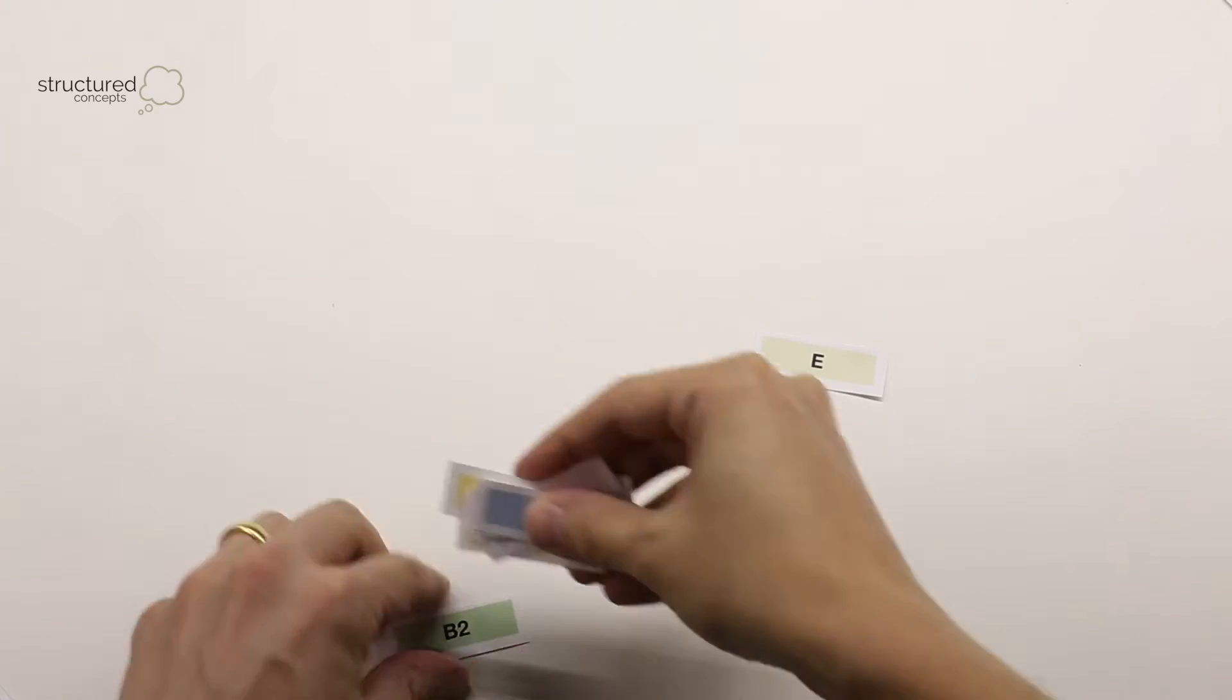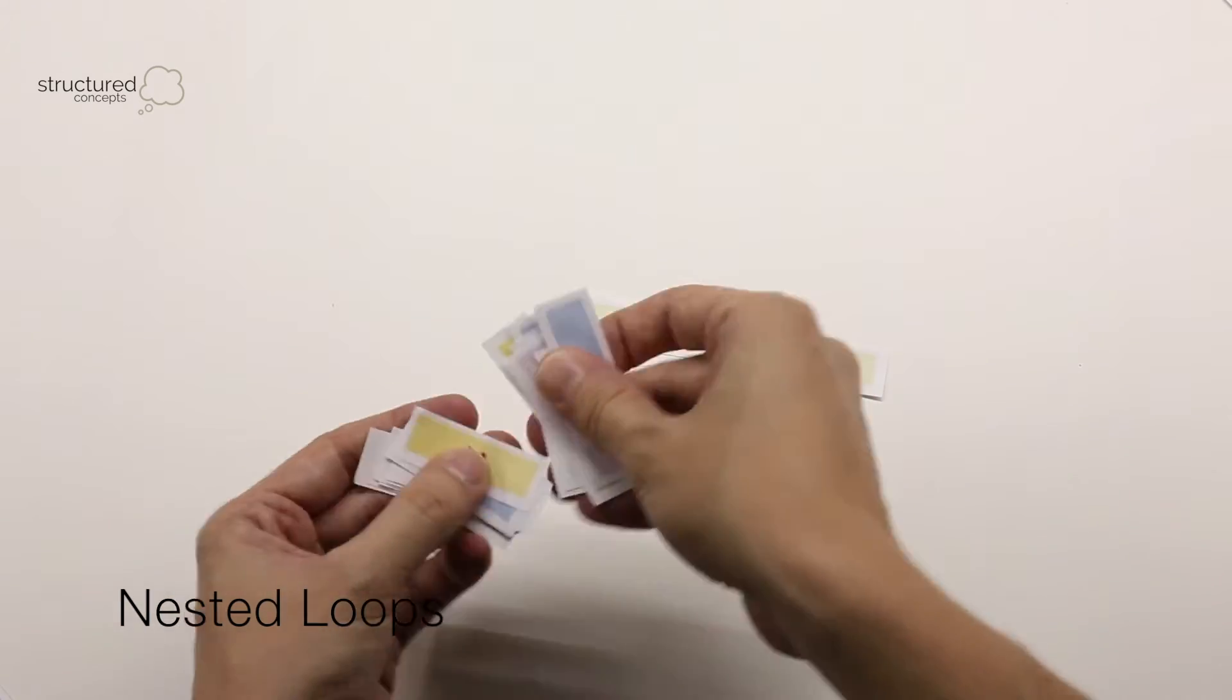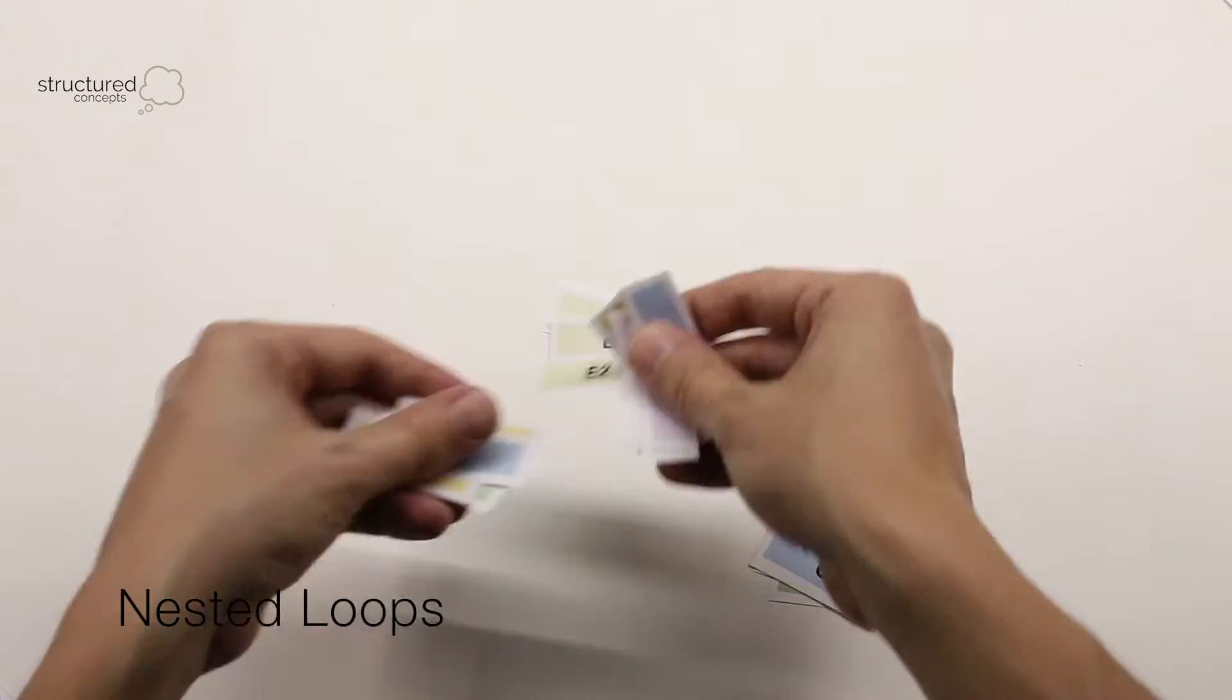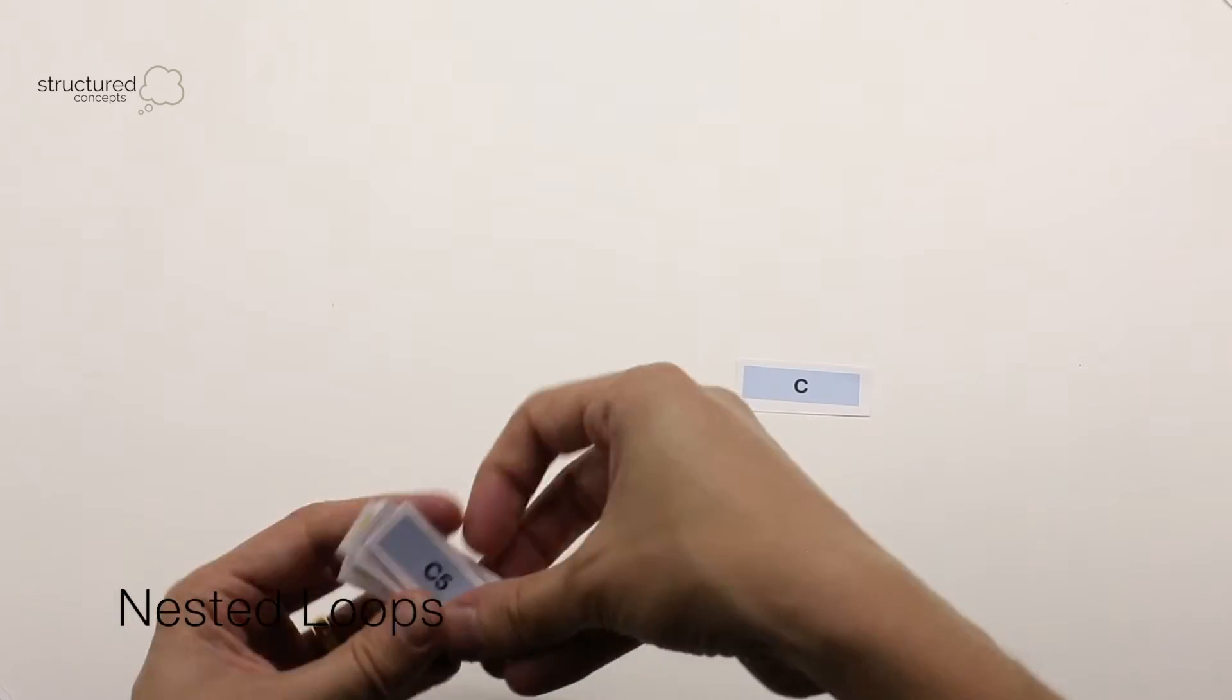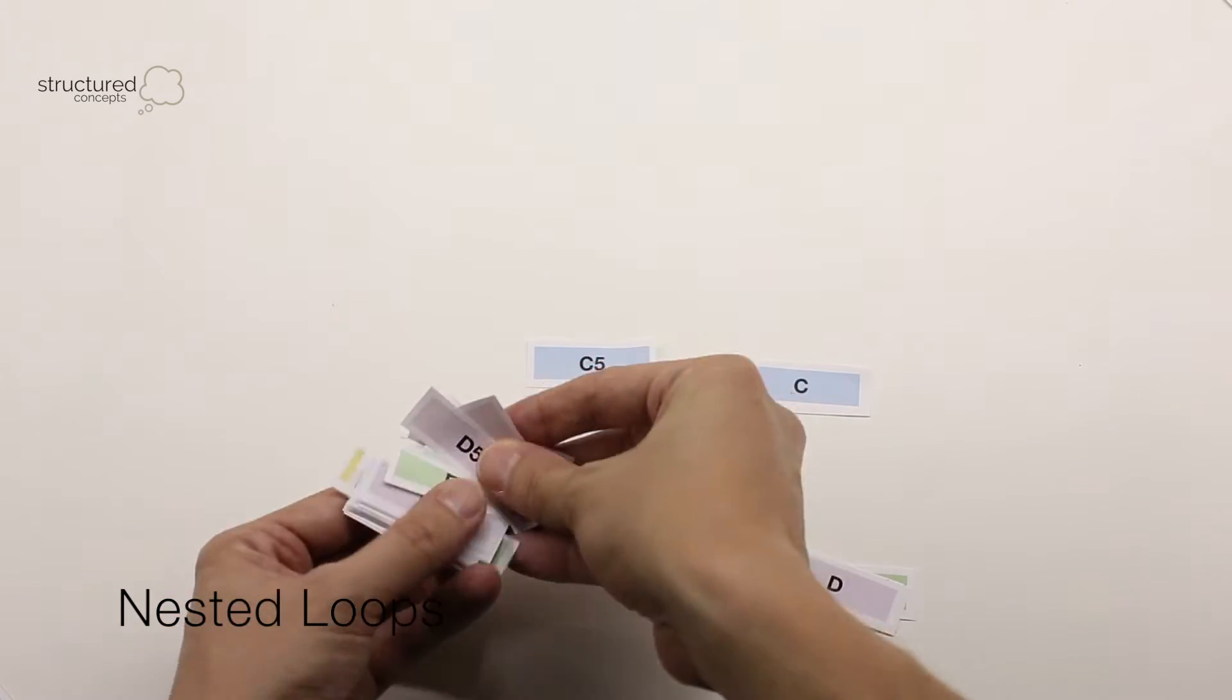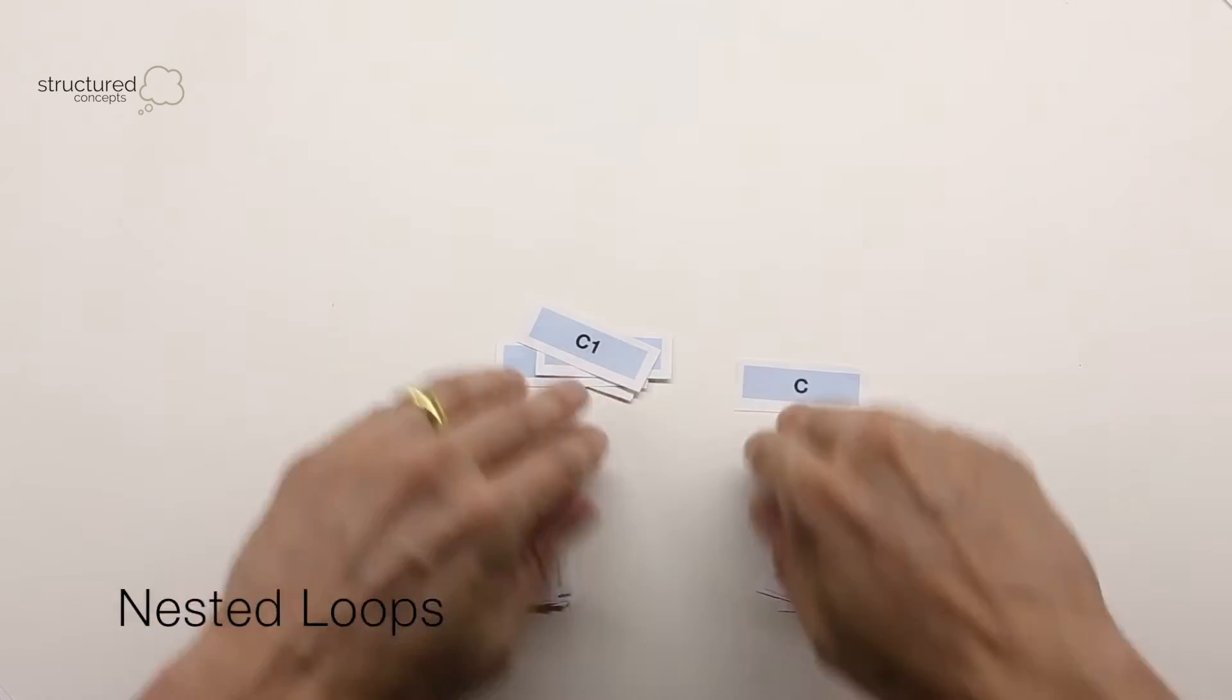The second join operator is the nested loop join. This is a brute force approach to joining, more similar to procedural programming. It takes the smaller table, what we call the build input, and loops through all of its rows. For each row in the build input, it gets the matching rows from the larger table, the probe input.